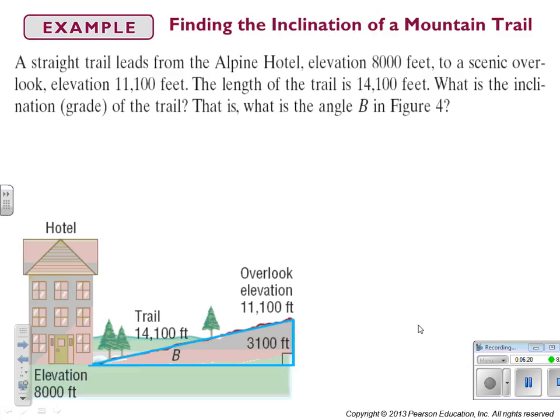A straight trail leads from the Alpine Hotel, elevation 8,000 feet to a scenic overlook, elevation 11,100 feet. The length of the trail is 14,100 feet. What is the inclination, grade of the trail? That is, what is the angle B in figure 4? So, we know, thankfully, they drew this picture for us. What are we going to do first to solve this triangle?